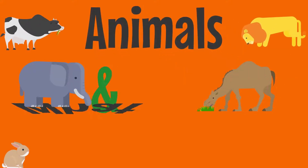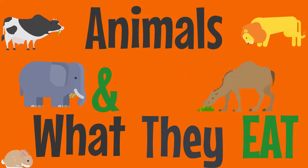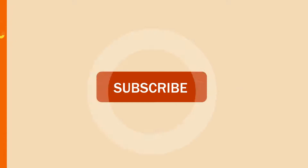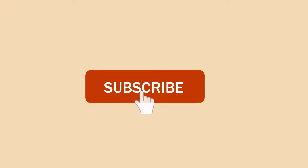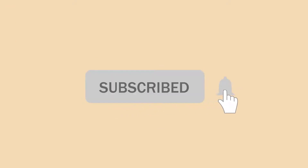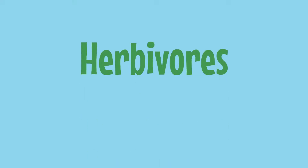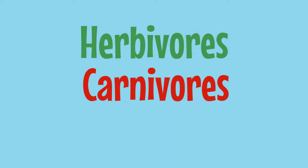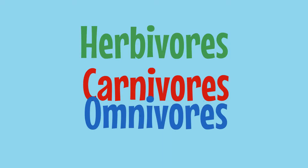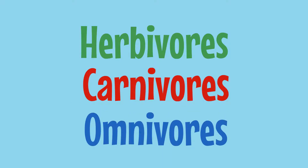Animals and what they eat. Animals fall into three main categories based on what they eat: there are herbivores, carnivores, and omnivores.